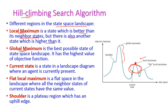Next is global maximum. This is the best possible state of the entire state space landscape — the highest value among all the other nodes. This is called global maximum. The next one is current state, which is the state in the landscape diagram where the agent is currently present. From the current state, we need to search the neighbor whose value is highest. Next is flat local maximum — a region where all the neighboring states have the same value. This is called flat local maximum.